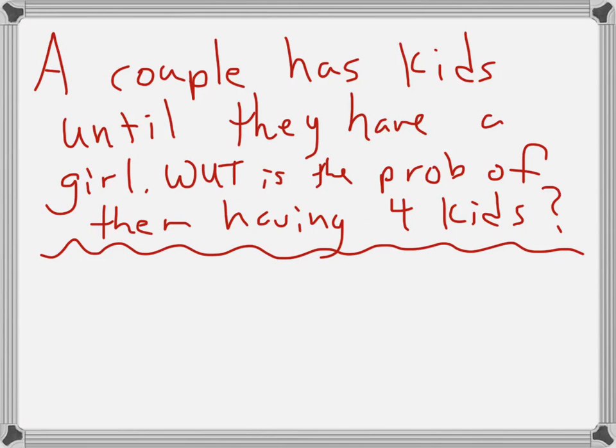Let's take a look at this problem. So a couple has kids until they have a girl. What is the probability of them having exactly four kids?